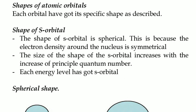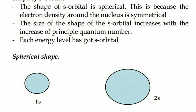Each orbital has got its specific shape as described. Shape of the S-orbital: The shape of S-orbital is spherical. This is because the electron density around the nucleus is symmetrical.